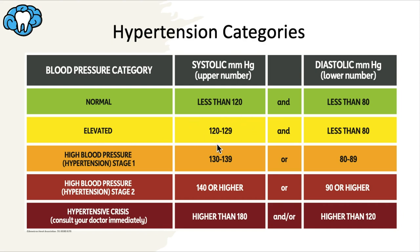Elevated blood pressure is typically treated conservatively with a healthy lifestyle. Stage 1 hypertension is where systolic is between 130 to 139, or diastolic is anywhere between 80 and 89 — a pretty low threshold relative to historical categories, typically treated with one blood pressure-lowering medication. Stage 2 hypertension is where systolic is 140 or higher, or diastolic is at least 90, typically treated with two blood pressure-lowering medications from two different drug classes.